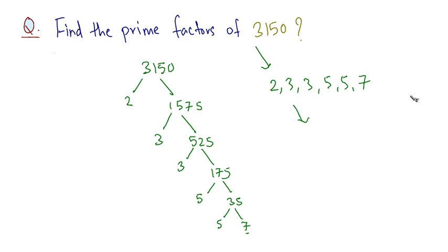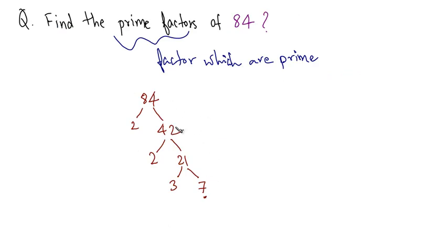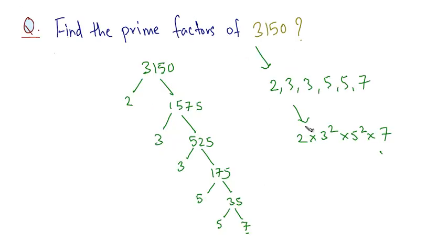Another way of writing this would be 2 × 3² × 5² × 7. In our previous example, we would have written it as 2² × 3 × 7. So these are the prime factors of 3150, and this is how you calculate the prime factors of any number.